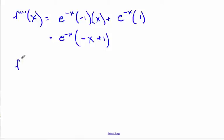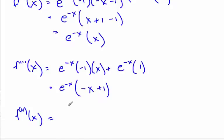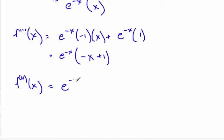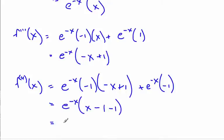For the fourth derivative, I take the derivative of e to the negative x via the chain rule, times negative 1, times negative x plus 1, plus e to the minus x times the derivative of negative x plus 1, which is negative 1. Pulling out e to the minus x, I get x minus 1 minus 1 more, giving e to the minus x times x minus 2.